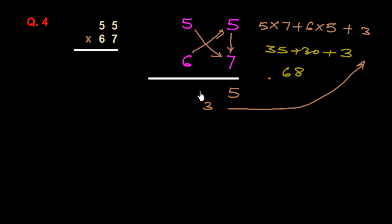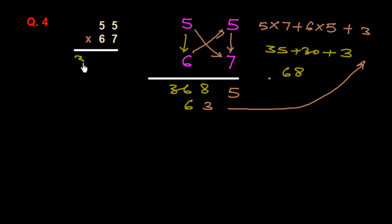We write down 8 and carry 6. Finally we multiply the tens-place digits vertically: 5 times 6 is 30, plus carry 6 is 36. So the answer is 3685.